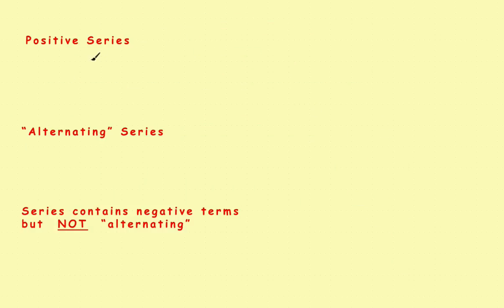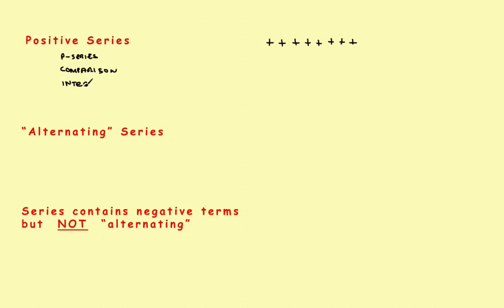To understand where this fits, all the early tests — p-series test, comparison tests, integral test, geometric series — were positive series tests, meaning all terms had to be positive. If you had an all-positive series you could use any of those tests. The next step was the alternating series test, for series where every other term changes sign. But those tests only work in those specific cases.